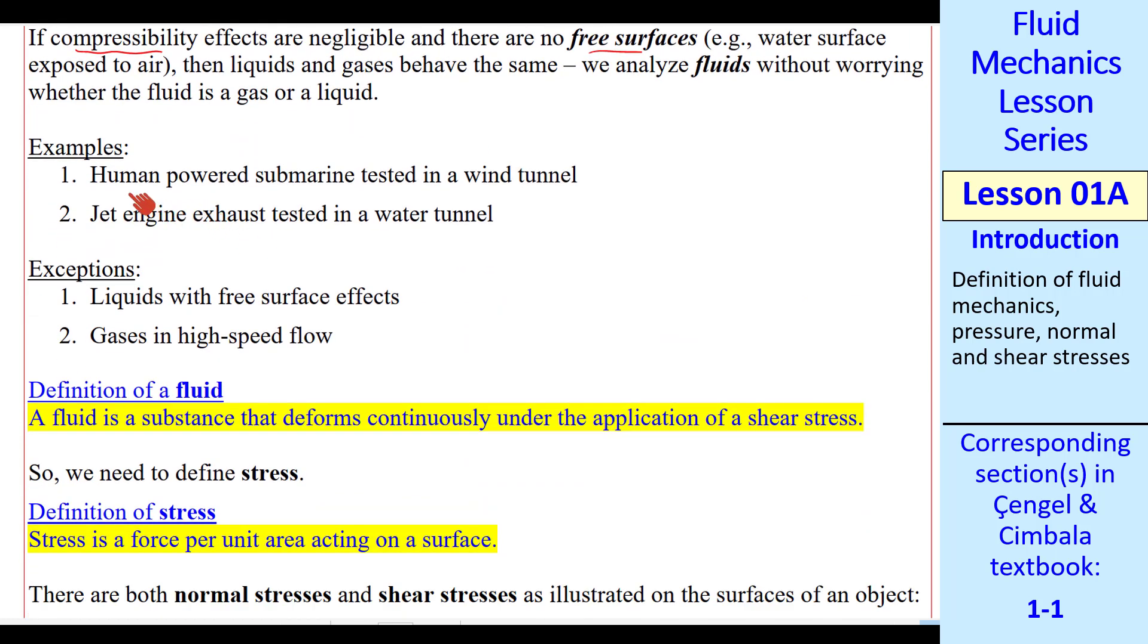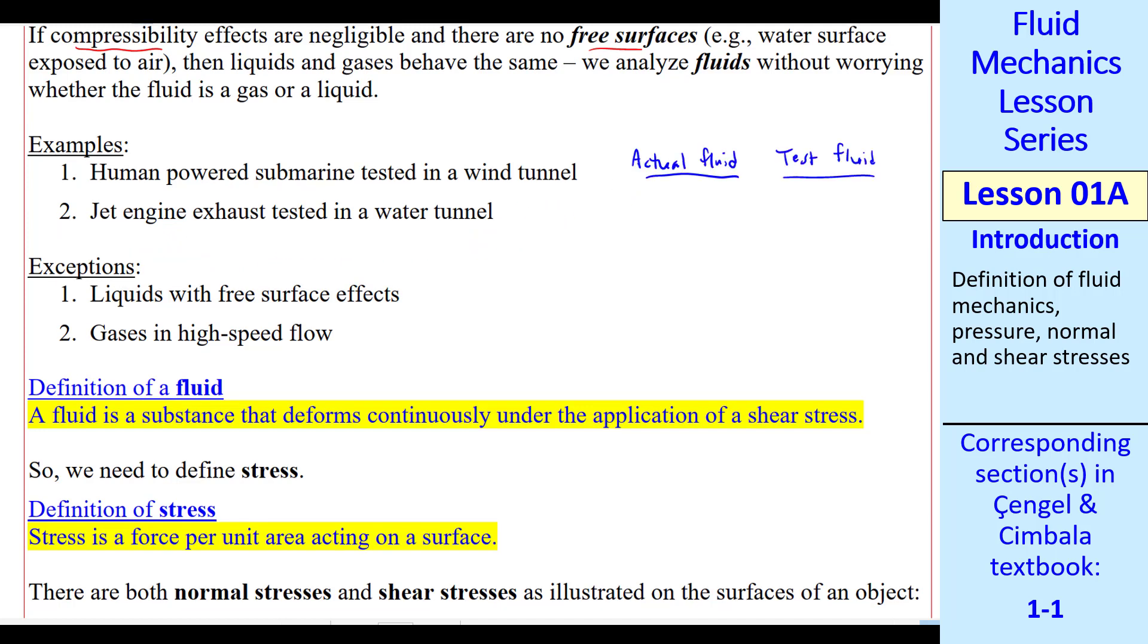Here are some quick examples. Some students at Penn State built a human-powered submarine, but we tested it in my wind tunnel. Another example, I was studying some jet engine exhaust for a research project, and I tested it in a water tunnel. So if we compare the actual fluid and the test fluid, the actual fluid here was water, but the test fluid was air. In this case, the actual fluid was air, and the tested fluid was water. It's just a matter of convenience. In water, it's easier to visualize, and in air, it's easier to measure.